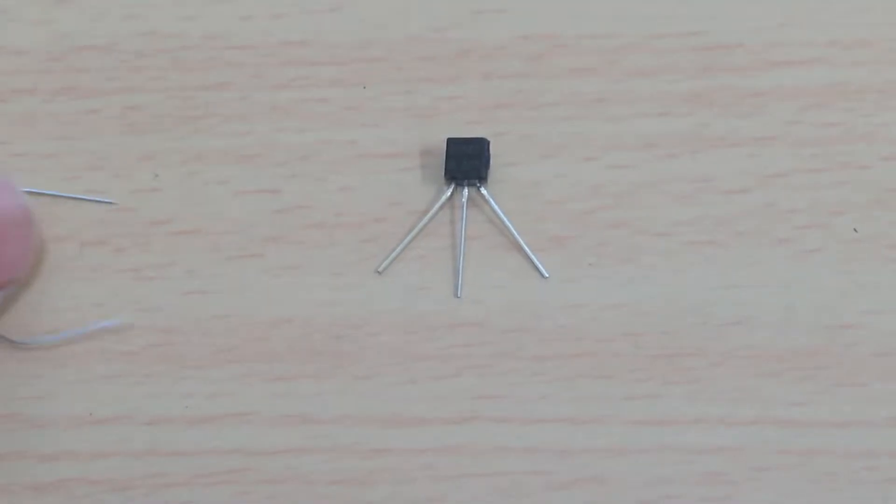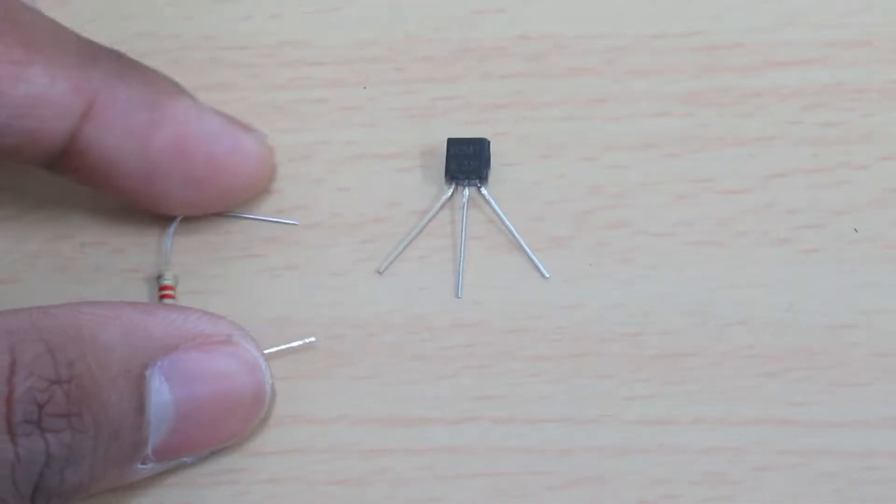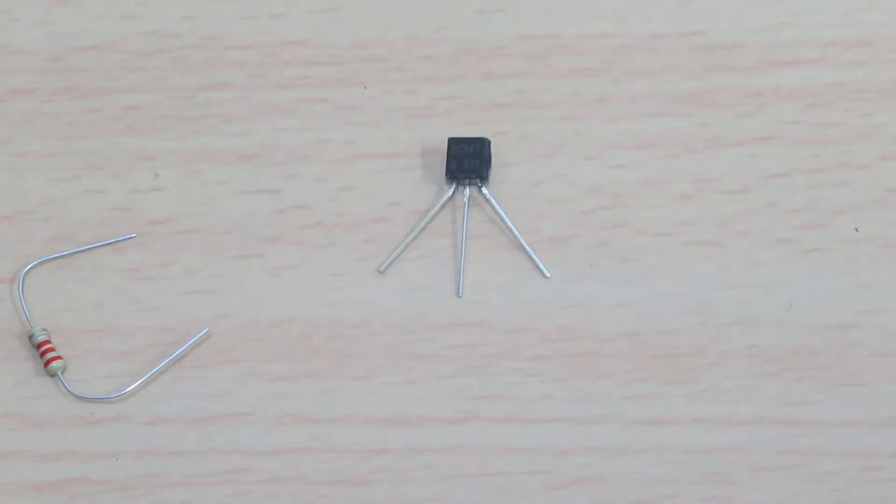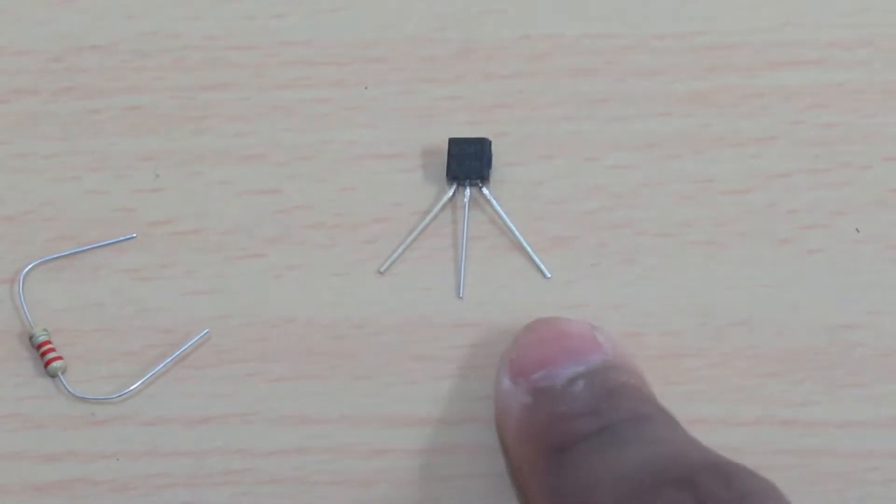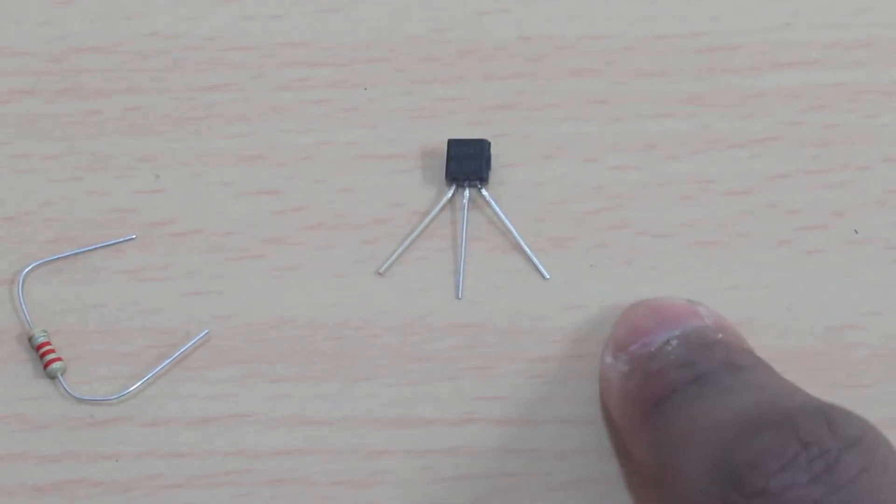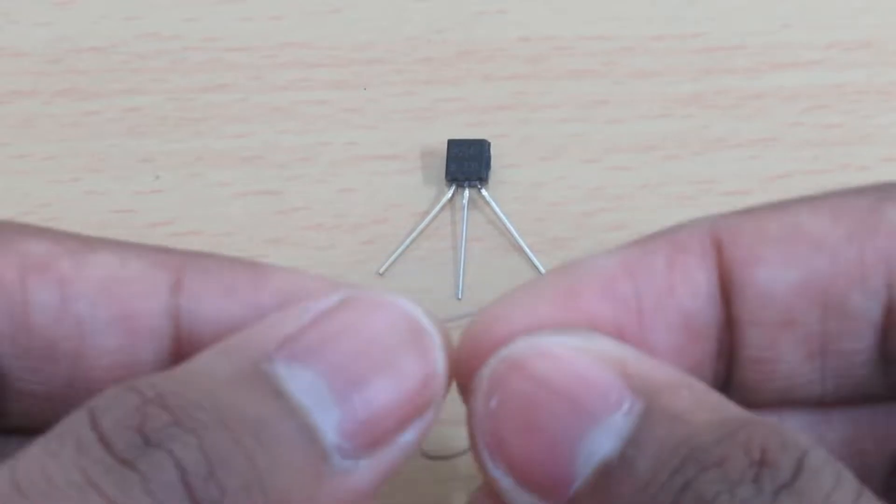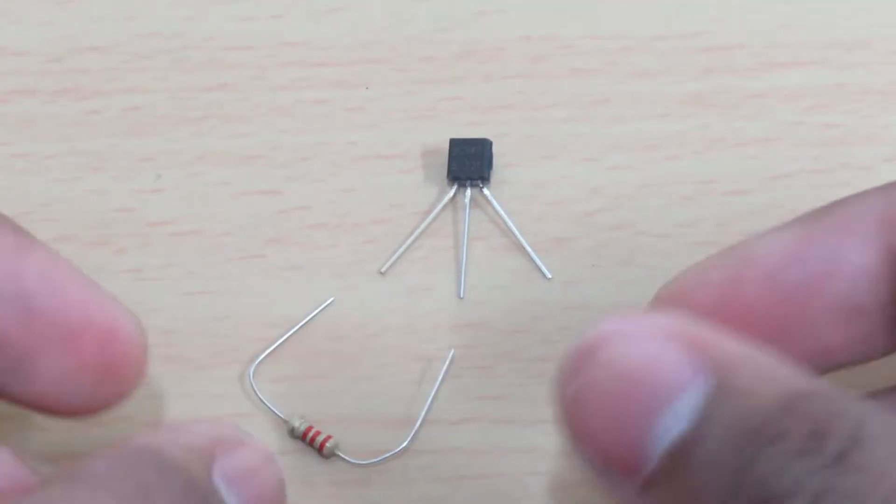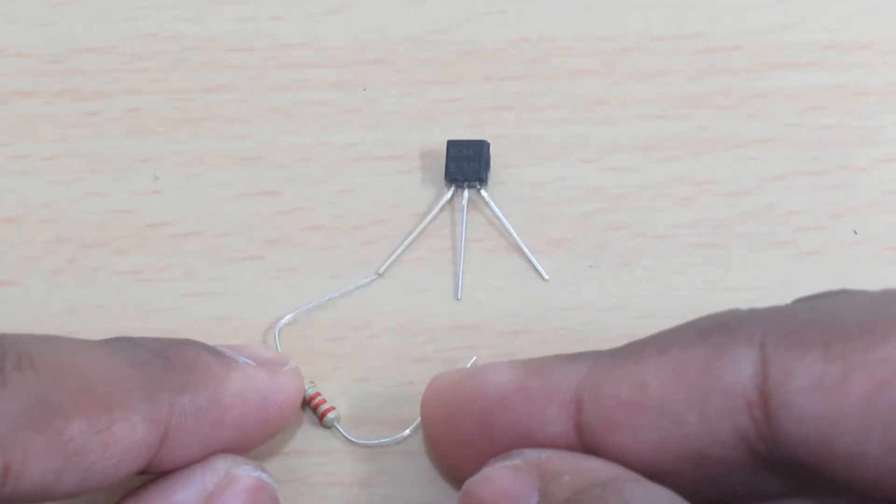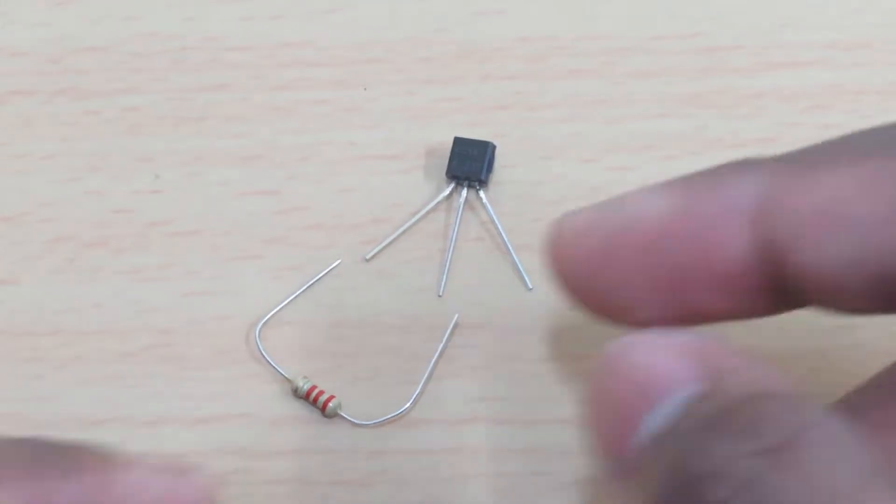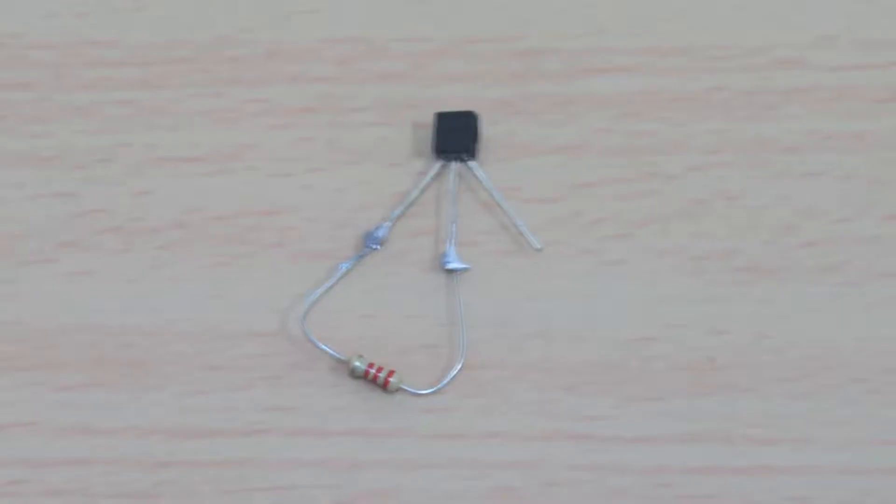To start making your laser security alarm, you will need to take your transistor and your resistor. There are three parts to your transistor: a collector, base, and an emitter. Now take your resistor and connect one end to the collector and the other end to the base. Now I have soldered the resistor to the transistor.